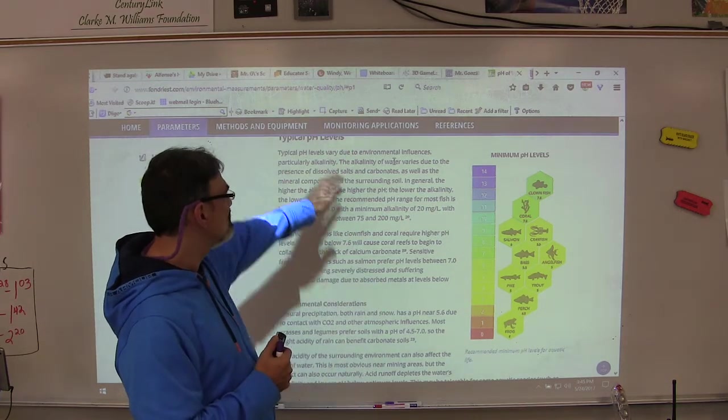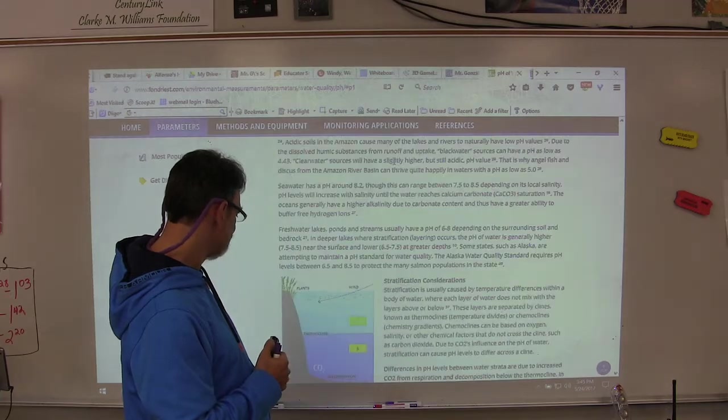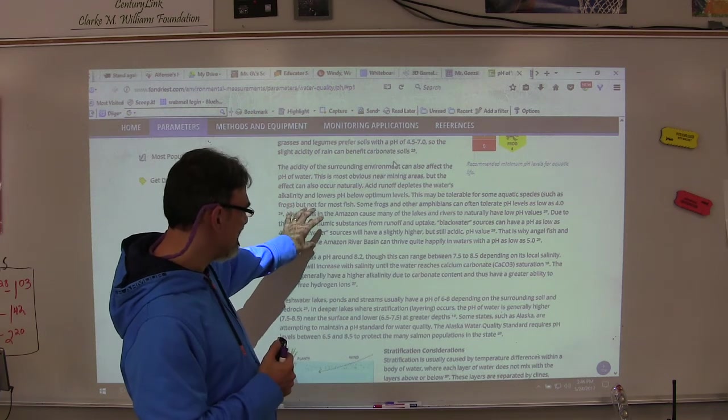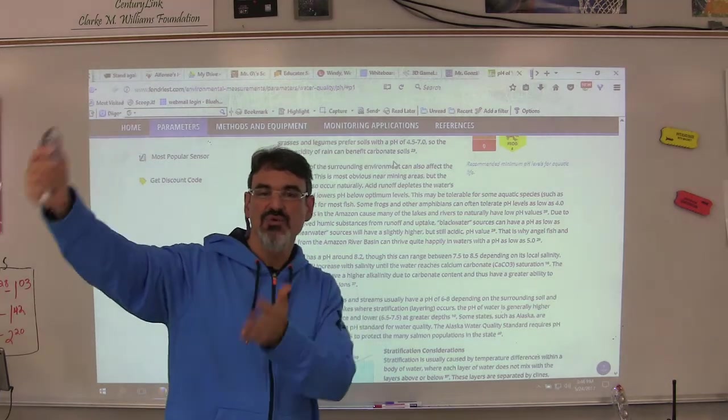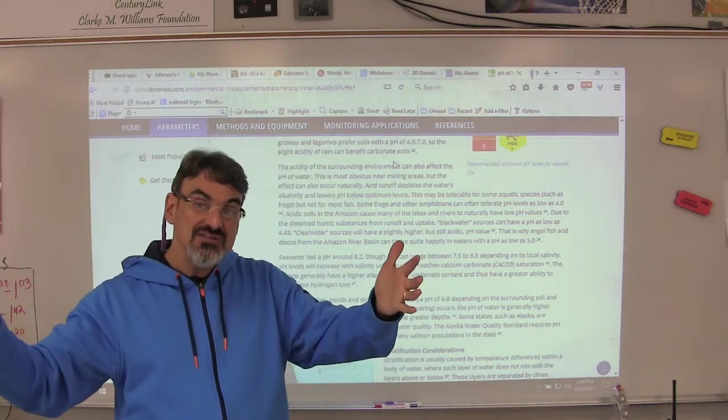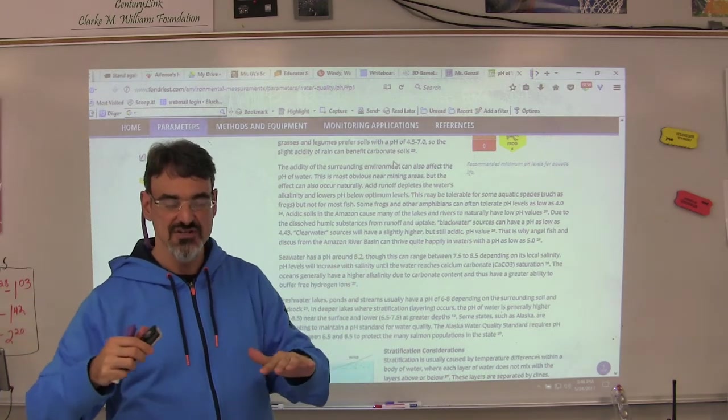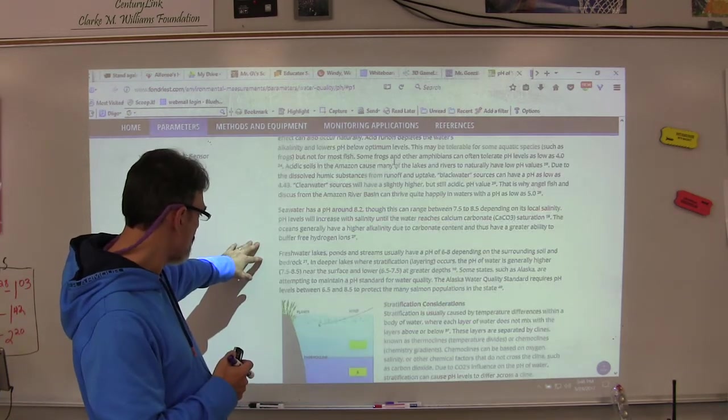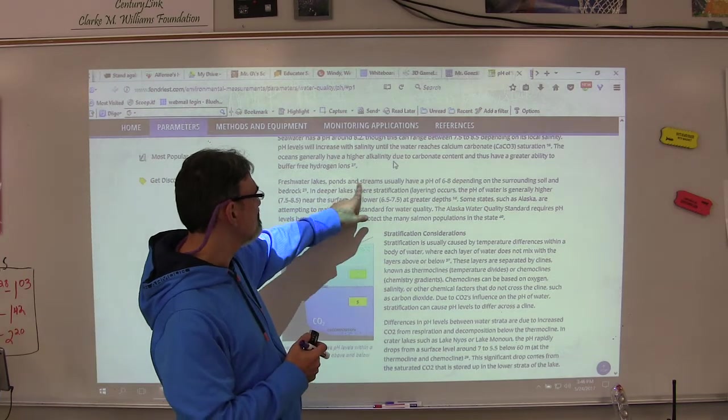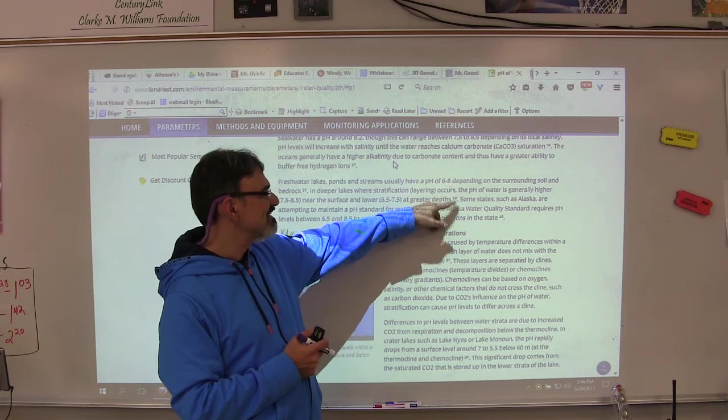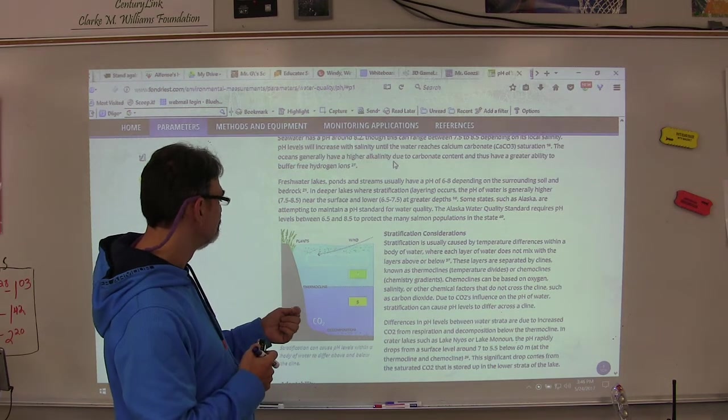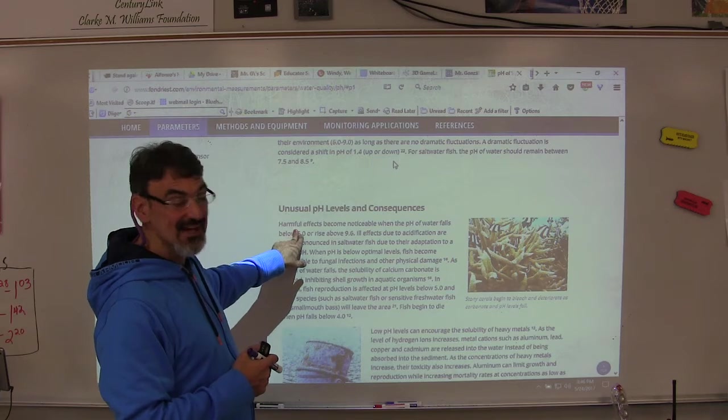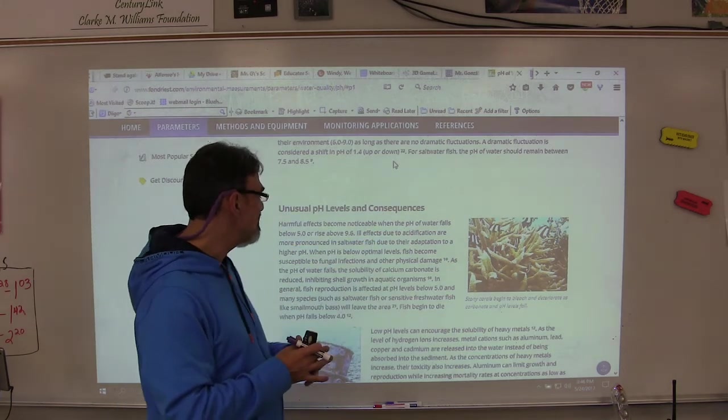This is a good one to read when you scroll down to typical pH levels. This part here is good because you can read about plants and soil pH, because all this comes into play with our creek. It's got plants on the riparian zone right on the edges of the creek, and then there's the bottom of the creek where the gravel, the rocks, and the sand and soil. It says here freshwater lakes, ponds, and streams usually have a pH of 6 to 8, depending on the surrounding soil and bedrock.